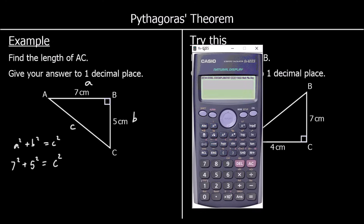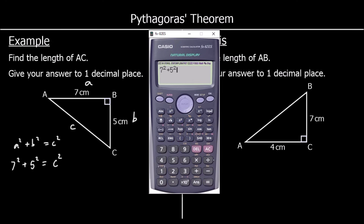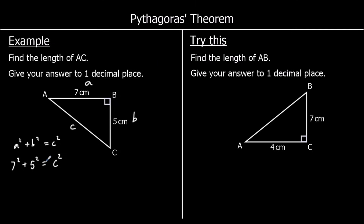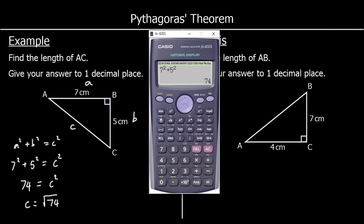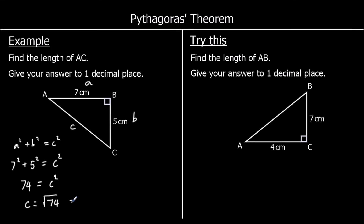So we've got 7 squared plus 5 squared equals c squared. Let's grab a calculator. 7 squared plus 5 squared is 74, so c squared equals 74. To get c by itself, we're going to square root. The square root of 74 to one decimal place is 8.6. So c is 8.6 centimeters.